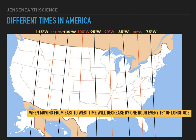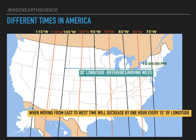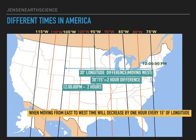For example, I want to find out what time it is at 105 degrees west if it is 12pm at 75 degrees west. So here's 75 degrees west and it's 12pm. We're moving from east to west. There's a 30 degree difference between the two longitudes. Since there is an hour difference every 15 degrees, when we have 30 degrees there will be a 2 hour difference.